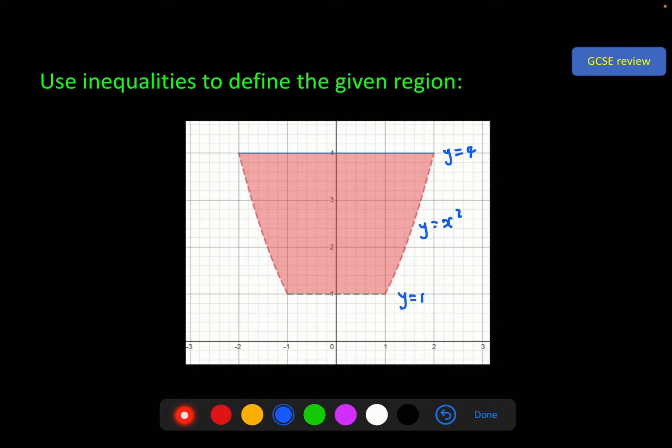We use these to define the region by choosing the appropriate inequalities. We can see that this region here is greater than 1 and less than 4 for y. We can also see that y must be greater than x squared to be in here. So we also have y is greater than x squared. And of course, you can test that these are correct by choosing any point in the region and making sure that it fits both of these.